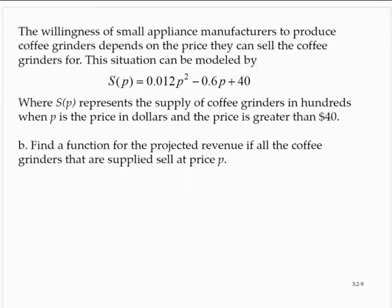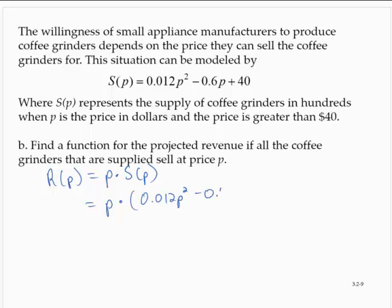Part b: Find a function for the projected revenue if all the coffee grinders that are supplied sell at price p. Well, if we're supplied a certain amount and they cost p dollars, then we can say that the revenue is equal to the price times the supply. So the revenue would be p times 0.012p squared minus 0.6p plus 40. Applying the distributive property, that would give me 0.012p to the third minus 0.6p squared plus 40p as the revenue model.